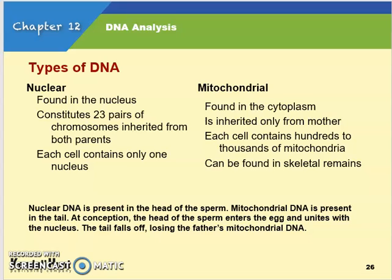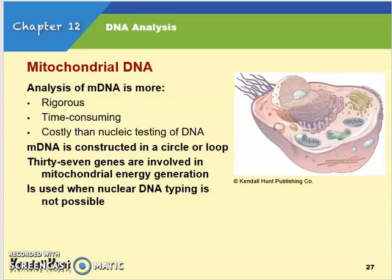There are two types of DNA. Nuclear DNA is found in the nucleus, contains 23 pairs of chromosomes inherited from both parents, and each cell has only one nucleus. Mitochondrial DNA is found in the cytoplasm, comes from your mother, and each cell contains hundreds to thousands of mitochondria — this is the type that can often be found in skeletal remains. Nuclear DNA is present in the head of sperm; mitochondrial DNA is in the tail. At conception, the sperm head enters the egg, the tail falls off, and the father's mitochondrial DNA is lost. Mitochondrial DNA analysis is more rigorous, time-consuming, and costly, so it's rarely done. It is a loop or circle with only 37 genes and is used when nuclear DNA typing is not possible.